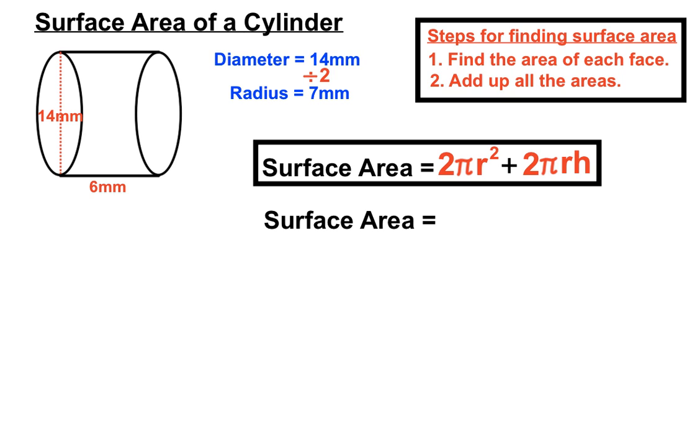So like in the previous question, we're filling in on the second line down, straight underneath the formula, the numbers from this particular question: 2 times π times 7 squared, because 7 was our radius we calculated. 2 times π times—now our radius is 7 once again, we pop that number in there, second spot.